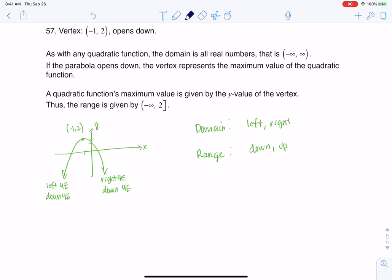Alright, so let's take a look at left and right. You can see that I've got left forever and right forever, so those are going to translate to positive and negative infinities.